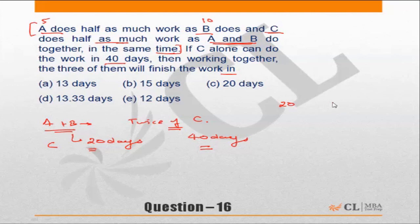C can finish the work in 40 days, and how many days will they complete the work working together? It will be 20 into 40 upon 20 plus 40, which is 60, which is 20 into 40 upon 60, which is nothing but 13 and 1/3 days.